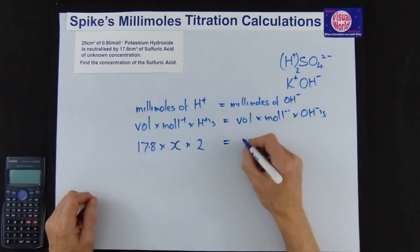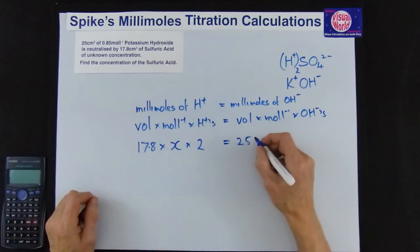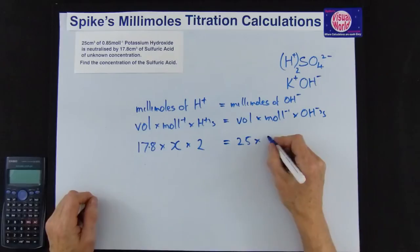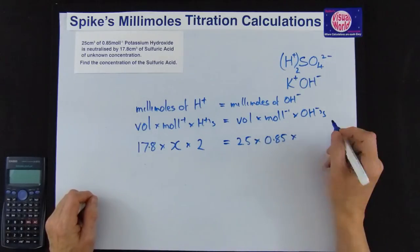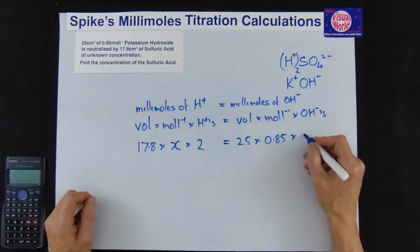And that's equal to the volume for the alkali which is 25 times the concentration of the alkali which is 0.85 moles per liter times the number of OH- in the alkali which is 1.